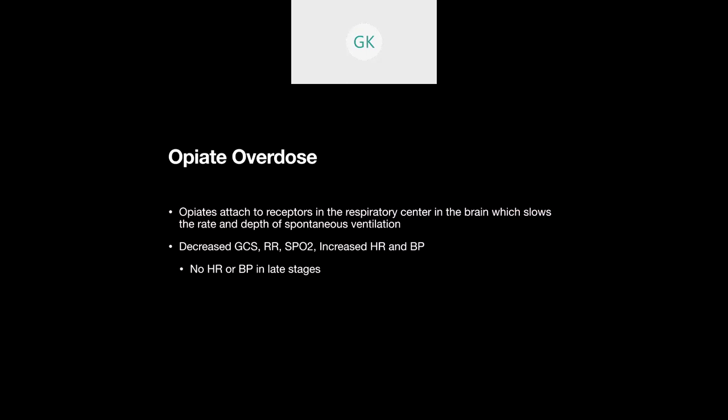All right. Case number four. So case number four is a 31 year old female found unconscious in her bedroom. She has a long history of polysubstance abuse and overdose. You find her with pinpoint pupils, agonal respiratory rate, and drug paraphernalia. So should we expect this patient to be in crisis? And what can we look at to tell us that? Well, with an opiate overdose, remember that you have opiates that are ingested into the body, whether it be taken orally through like Oxycontin pills or injected via heroin or fentanyl. And those opiates attach to receptors in the respiratory center of the brain. And that's going to slow the rate and depth of spontaneous ventilation.